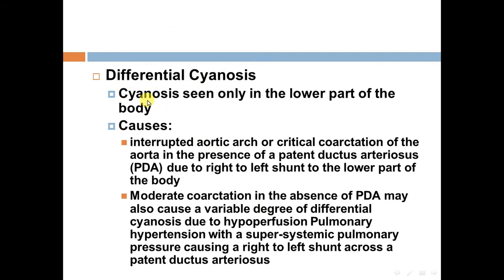Differential cyanosis is cyanosis seen only in the lower part of the body. Causes include interrupted aortic arch or critical coarctation of the aorta in the presence of a PDA, due to right-to-left shunt to the lower part of the body. Moderate coarctation in the absence of a PDA may also cause a variable degree of differential cyanosis due to hypoperfusion — pulmonary hypertension with suprasystemic pulmonary pressure causing right-to-left shunt across the PDA.